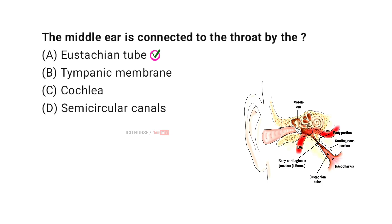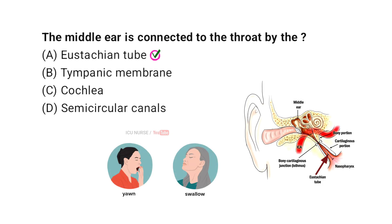The middle ear is connected to the throat by the Eustachian tube. This tube helps maintain equal air pressure on both sides of the eardrum. When you swallow or yawn, the Eustachian tube opens, allowing air to flow between the middle ear and the throat.